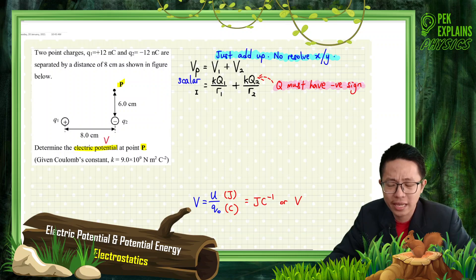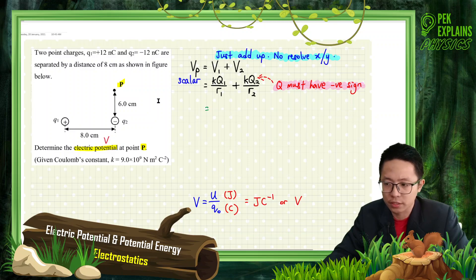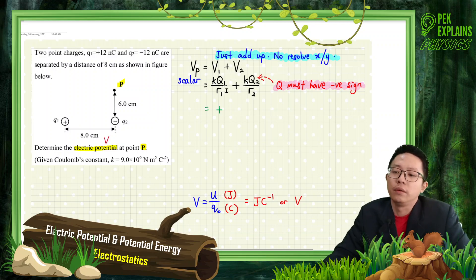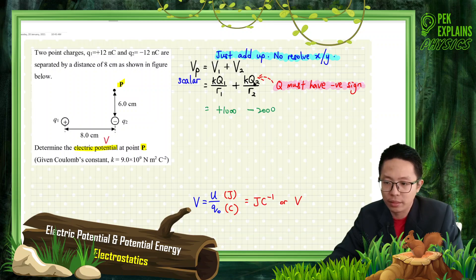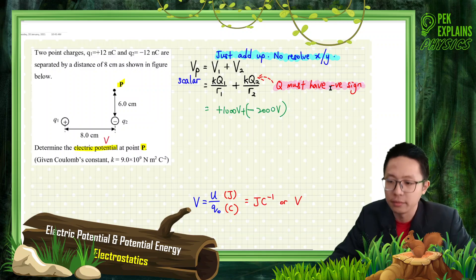For scalar quantity like potential, you must substitute the negative sign for a negative charge. A positive charge gives a positive potential; a negative charge gives a negative potential. So for example, Q1 might give positive 1,000 volts and Q2 might give negative 2,000 volts — you just add them together.